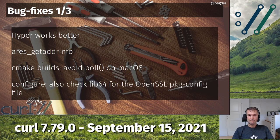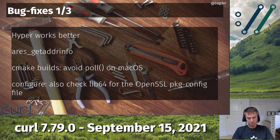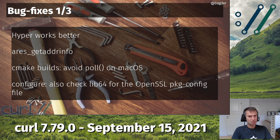We've been working with OpenSSL v3 betas for a long time to make sure curl works fine with all its changes. Just a few weeks before OpenSSL released v3, they modified how they install libraries by default on 64-bit systems - now they install in /lib64 instead of $prefix/lib - which broke curl's configure script that tries to detect OpenSSL installations. So if you're building curl with OpenSSL v3, you want this fix and curl's configure will be happier.